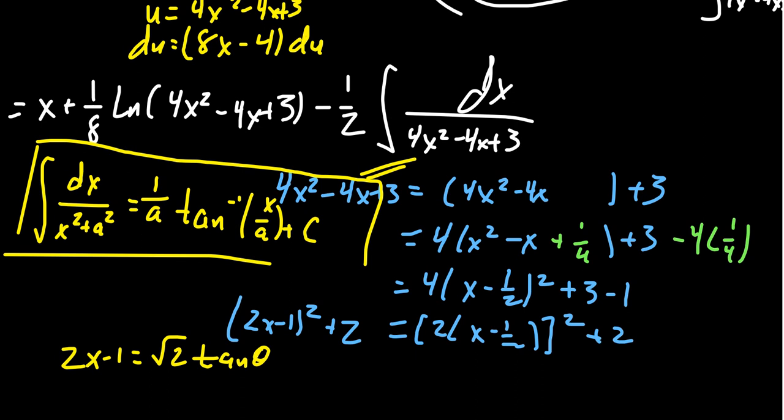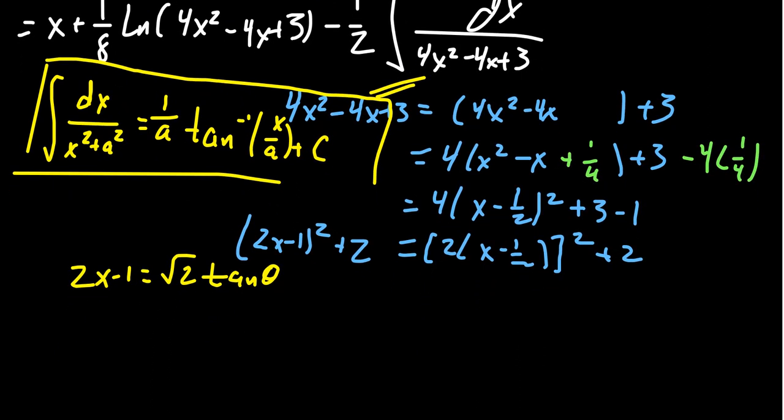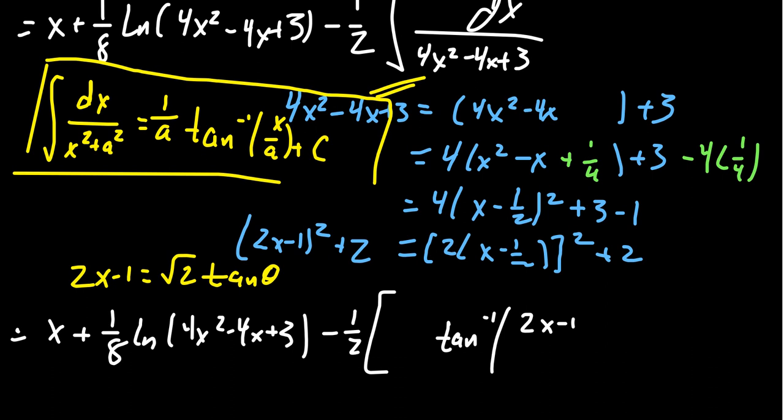And so using this formula, let me copy down what we had before. You have x plus 1/8 the natural log of the polynomial 4x squared minus 4x plus 3. And so then we're going to get negative 1/2 sitting in front of, well, in this situation you're going to replace x with 2x minus 1. So you're going to get arc tangent of (2x minus 1) over the a value. The a value is going to be the square root of 2, so you get square root of 2 on the inside, and then you get 1 over square root of 2 on the outside, plus an arbitrary constant.